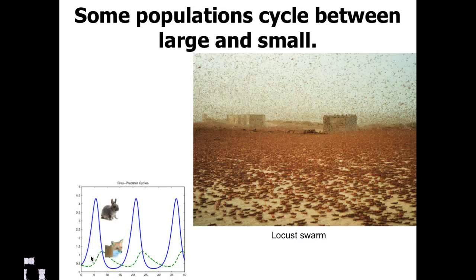In the previous segment on population ecology, we looked at density dependent and density independent factors that help generally to stabilize a population. Some populations cycle between large and small — a sort of boom and bust. With the locust swarm in the larger image, this is obviously a boom period. But then all the locusts will die off, go through a hibernation period, and you'll have this bust period, which is a density dependent factor and will influence the number of locust predators around.